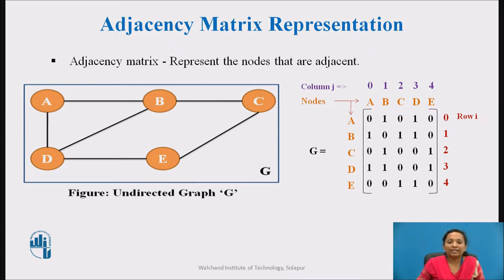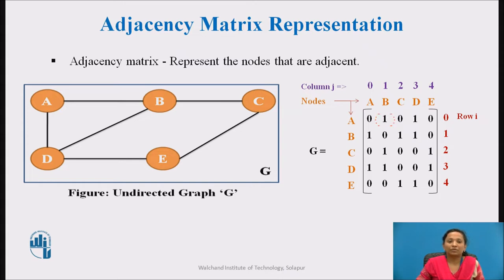An entry in adjacency matrix G will contain 1 at the ith row and jth column if the vertices vi and vj are adjacent to each other. For example, in graph G there is an edge between vertices a and b. Therefore, at the 0th row and 1st column the matrix cell value is set to 1. Whereas there is no edge between vertex a and e, therefore the 0th row and 4th column matrix cell value is set to 0.